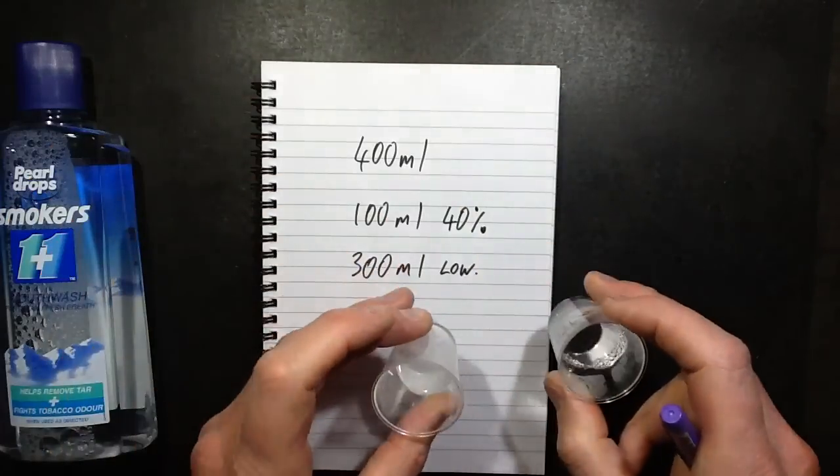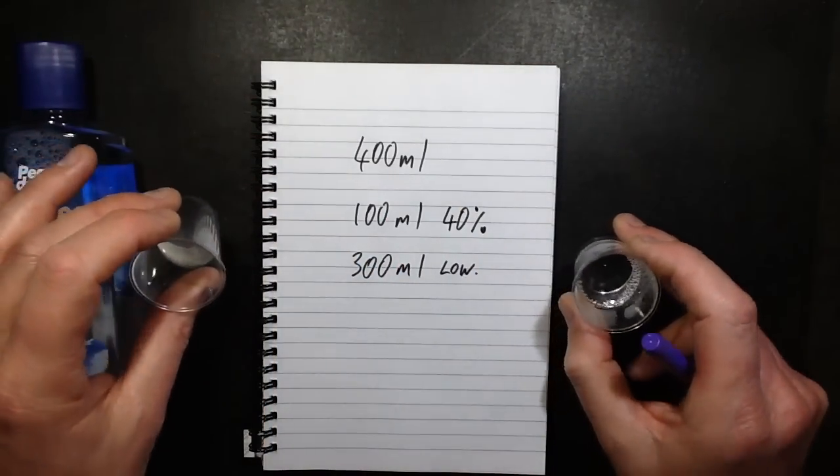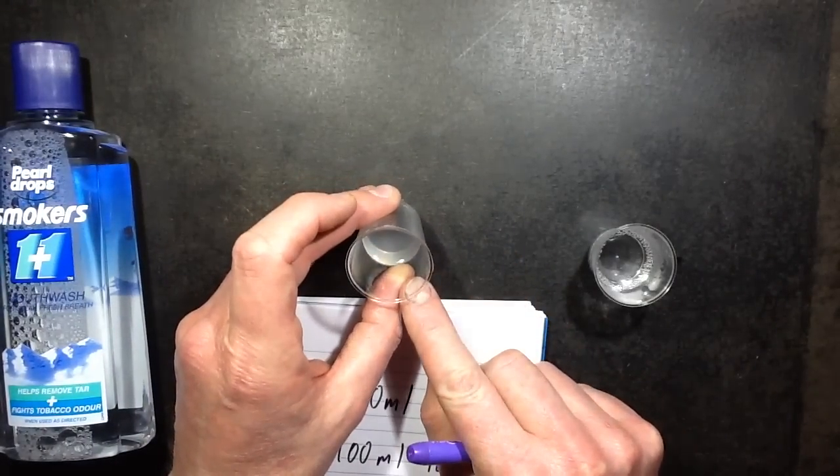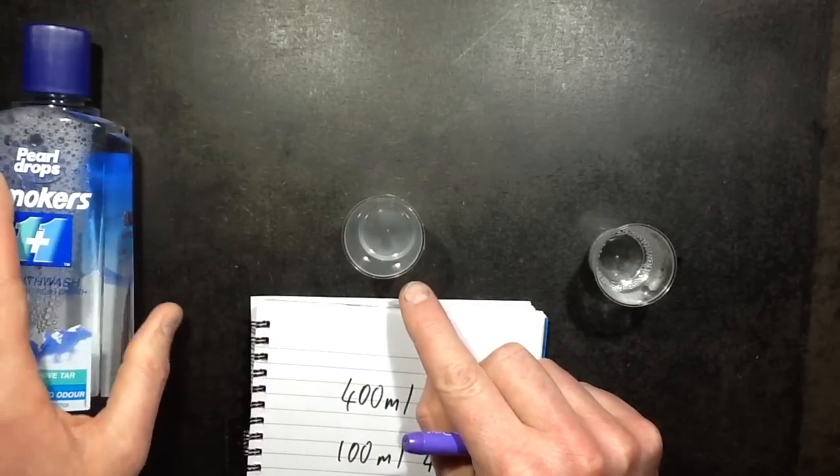And the two liquids it's separated out in, the alcohol one has a very cloudy look to it, suggesting it's got a lot of oil in it. And that kind of fits, because these tend to have menthol oil.